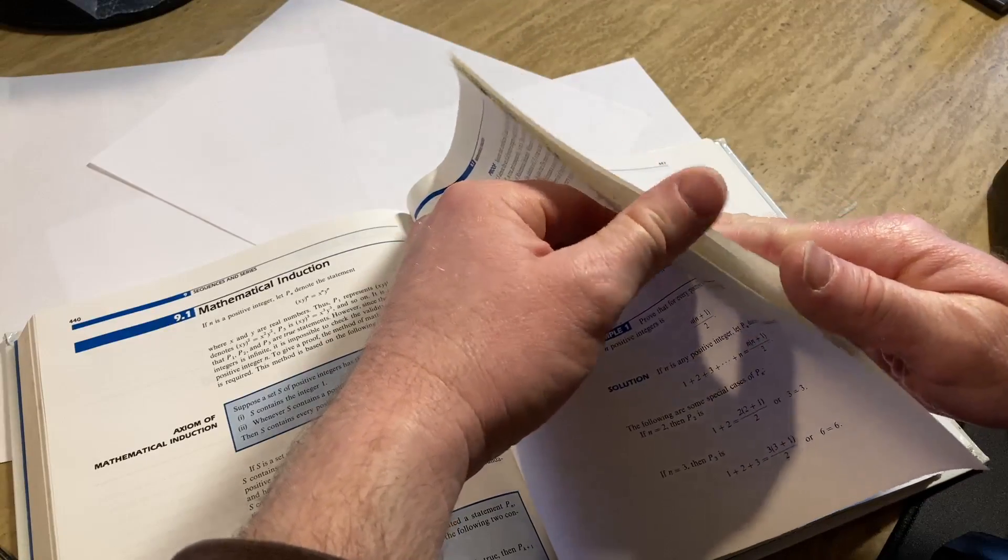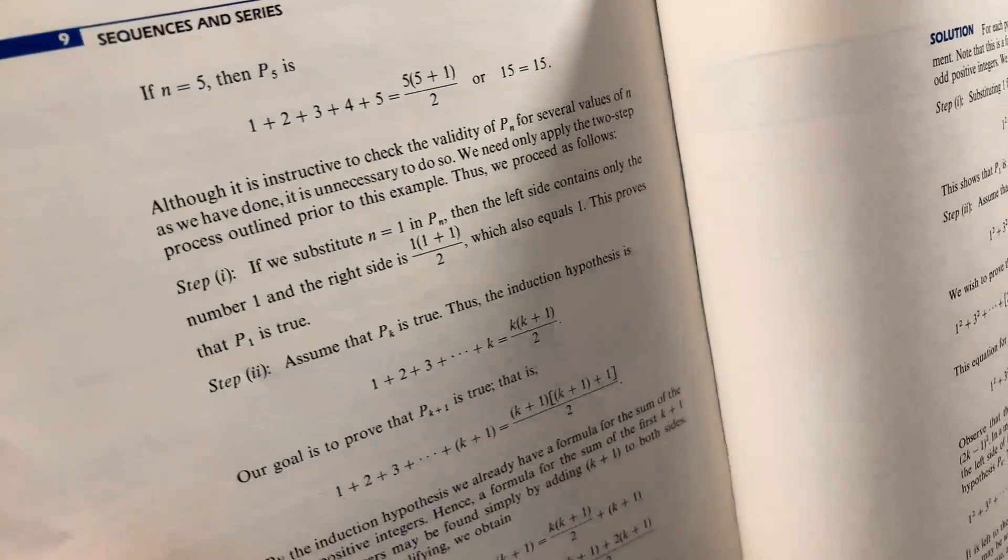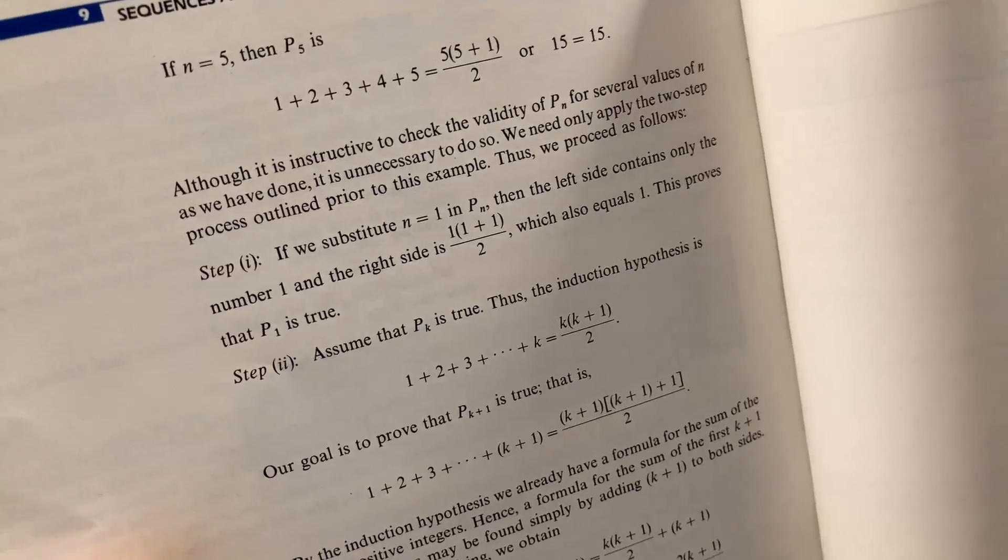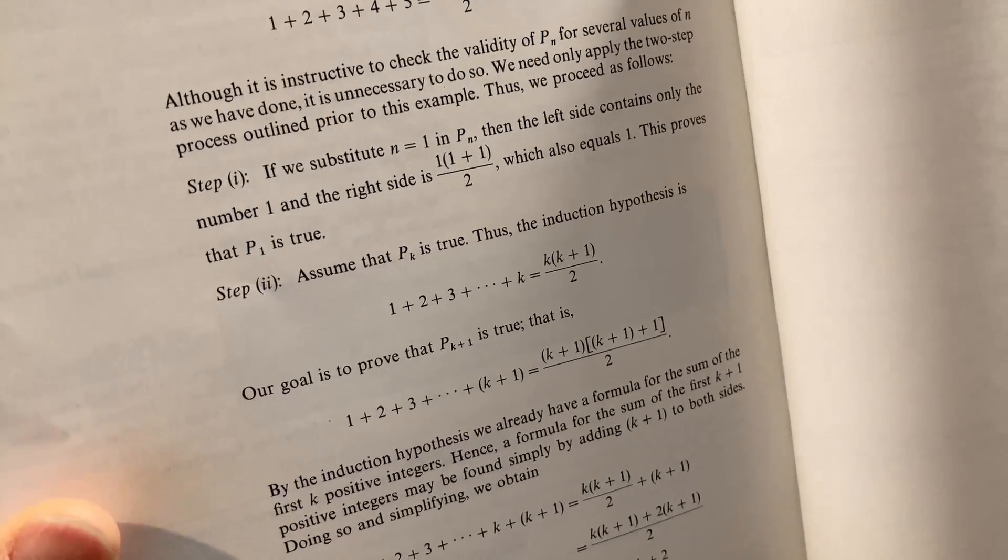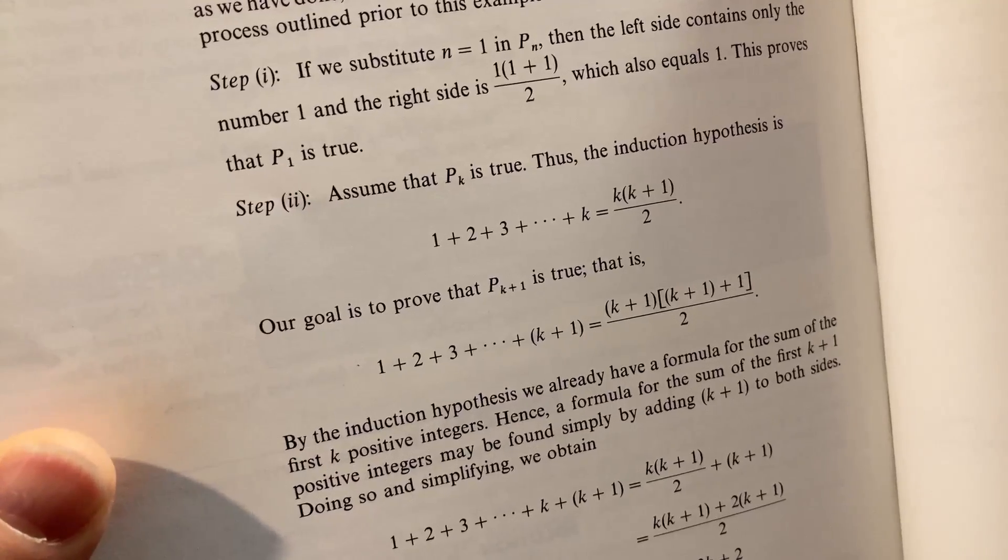They do start with one. They do it here. If we substitute n equals 1 in P of n, then the left hand side contains only the number 1 in the right hand side. There we go. And step two, assume that P_k is true. That's the induction hypothesis, right? So you get to write that down.